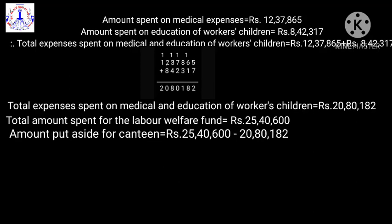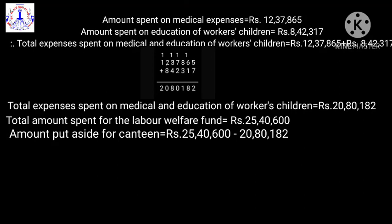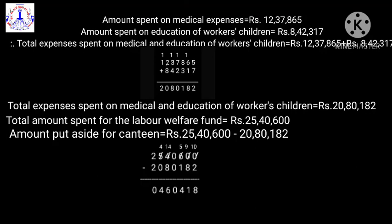Amount put aside for the canteen = rupees 25,40,600 minus 20,80,182. When we subtract, we get the answer 4,60,418. The amount put aside for the canteen is rupees 4,60,418 by the management.